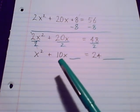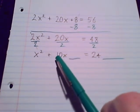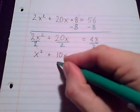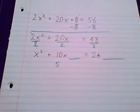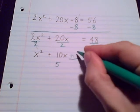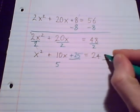What number do we need? There's our positive 10. We cut it in half and get 5. 5 squared—it's a 25 that we need.